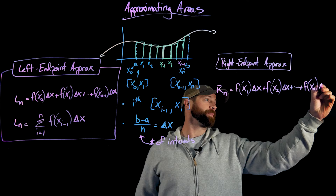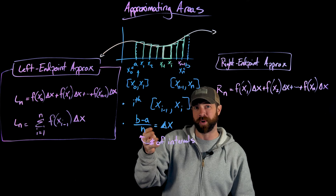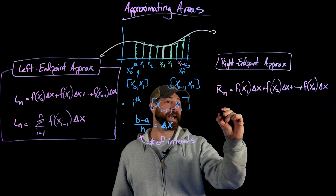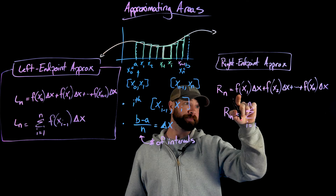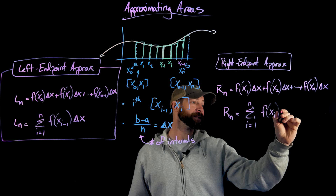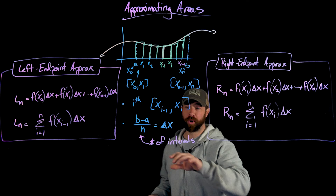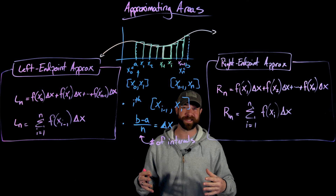Looking at both, they are very similar — just shifted over slightly. For L sub N, the function values go from X sub zero to X sub N-minus-one using the left points. For R sub N, we start at X sub one and go to X sub N using the right points. In sigma notation, R sub N equals the summation from I equals one to N of F of X sub I times delta X. Now let's do a couple of simple examples to get our feet under us using these approximations.